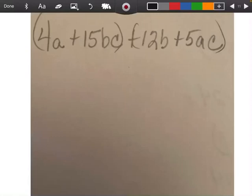All right, so this is another problem here out of 5.1 and it's factoring. And so we have 4a plus 15bc plus 12b plus 5ac.